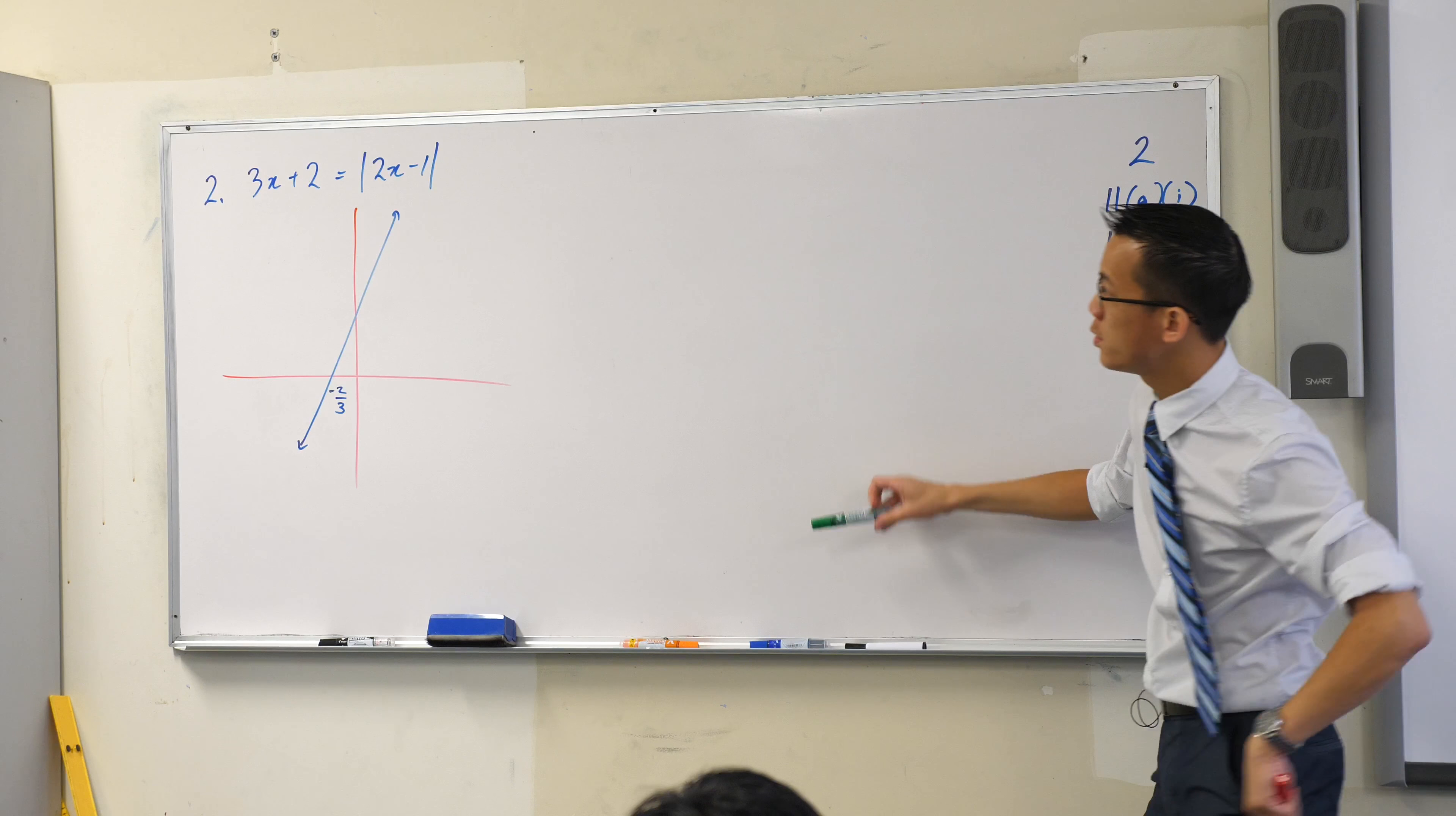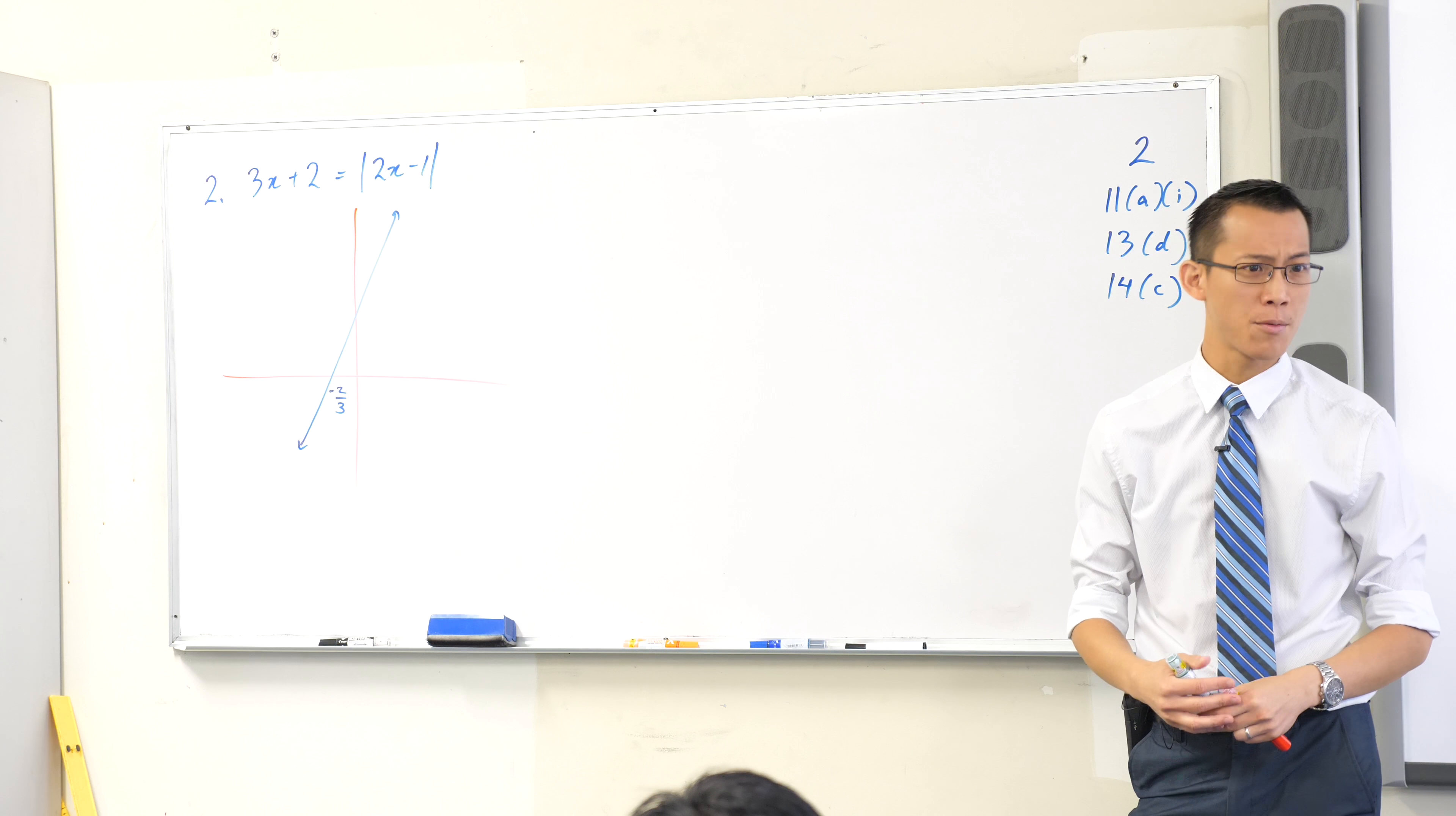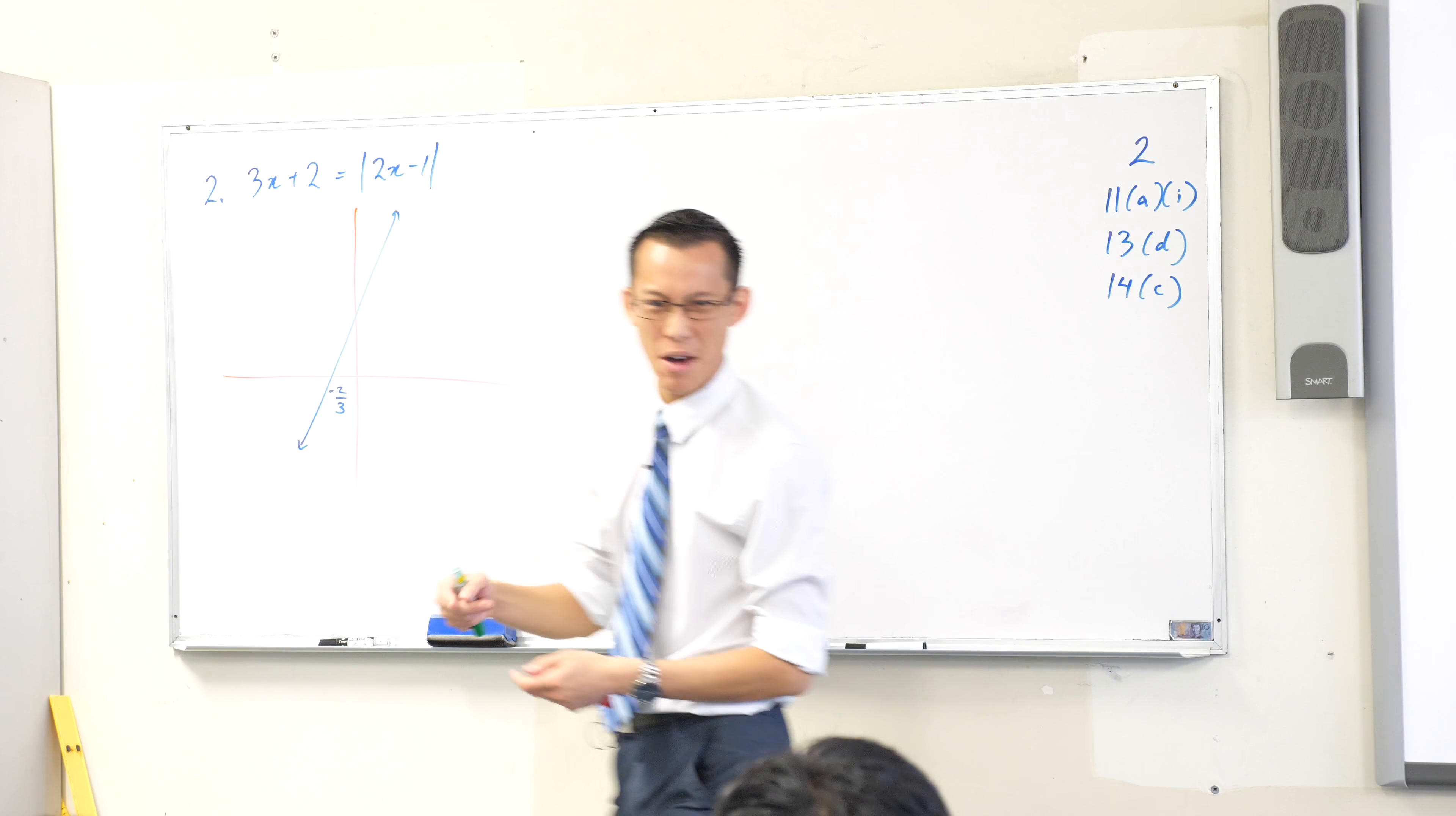What about this other graph? Absolute value of 2x minus 1. Well, we know what 2x minus 1 normally looks like. The 2 tells you it's steeper or less steep? Compared to the other line. Steeper or less steep? It's less steep than that one, right?